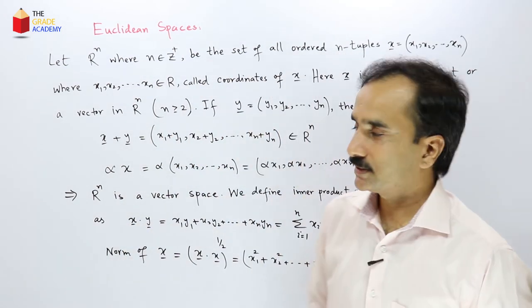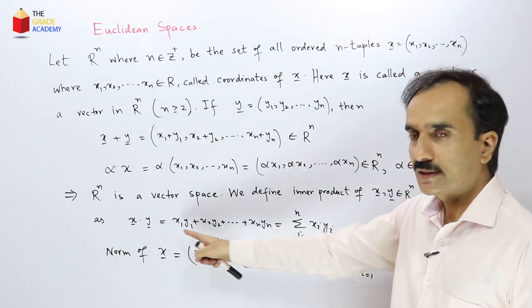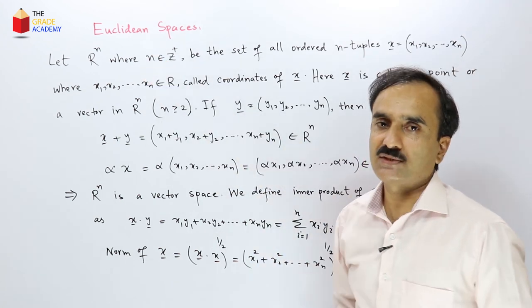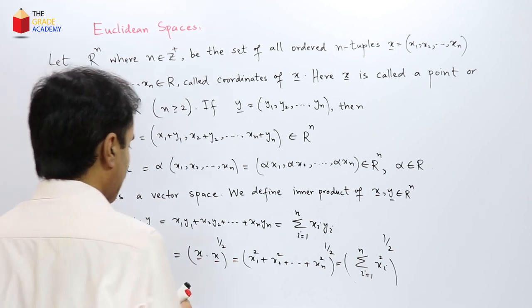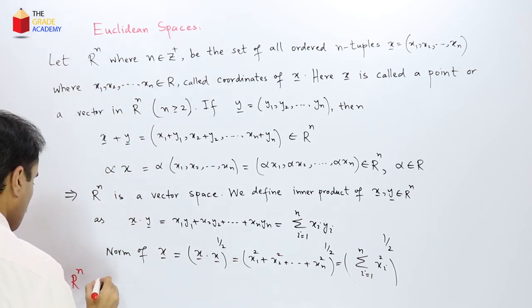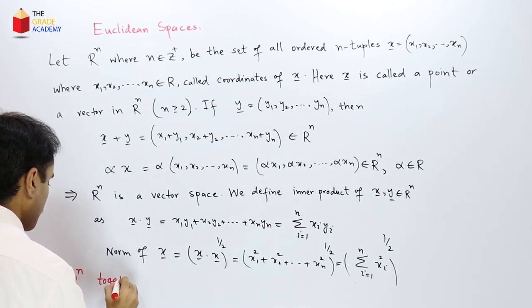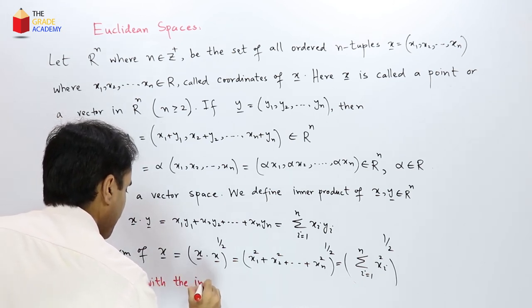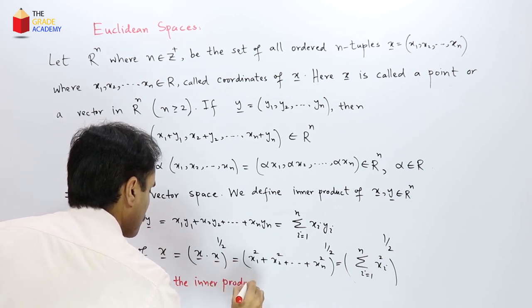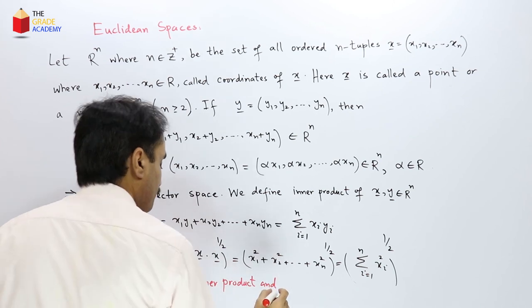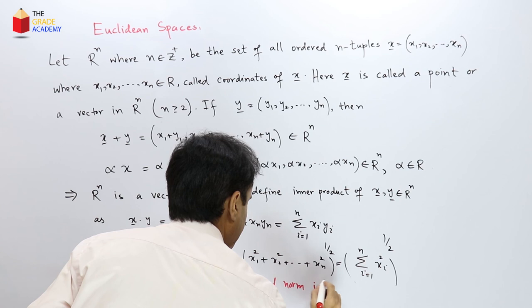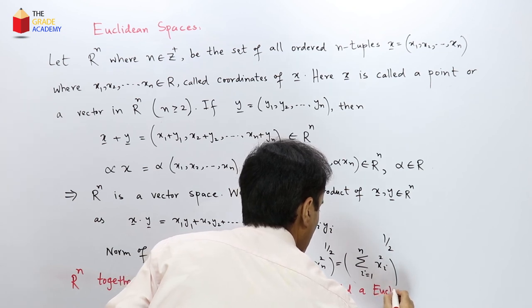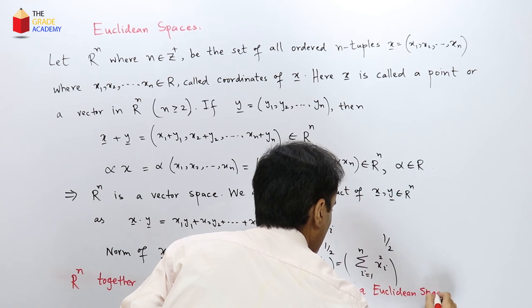So any vector space with this inner product and this norm defined on it is called a Euclidean space. So we say that Rn together with the inner product and norm is called Euclidean space.